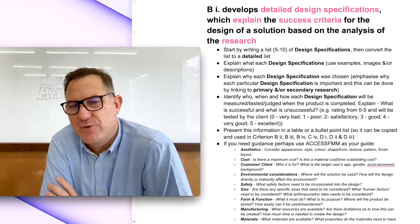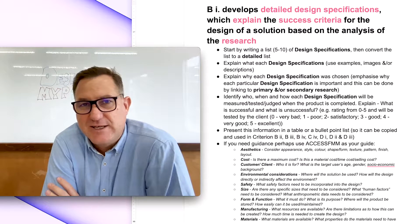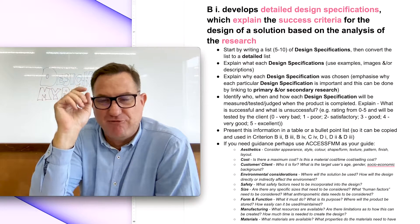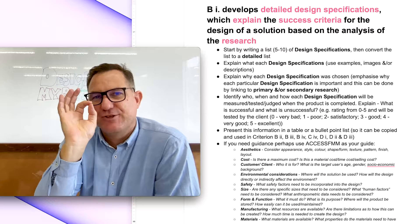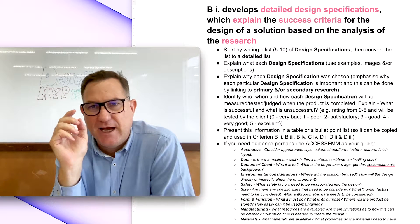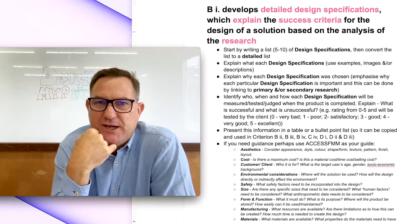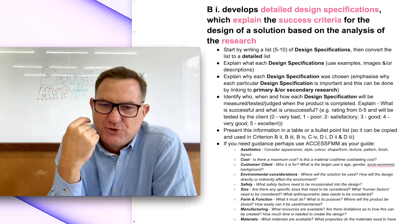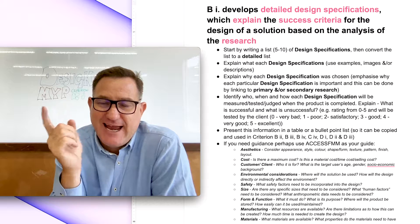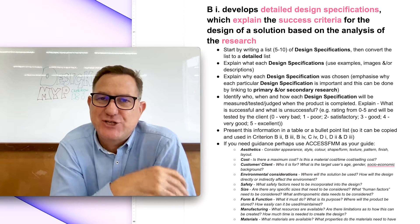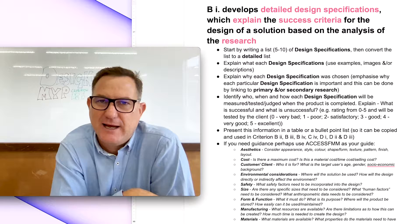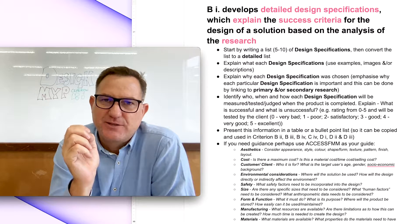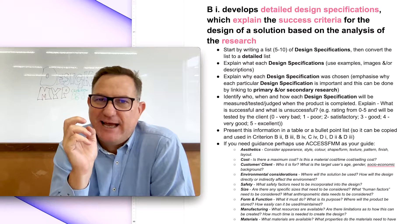So first of all I would recommend that you start with a list of design specifications. So just try to aim for like between 5 and 10. Just list out the design specifications for the product that you're actually going to make. Now if you're stuck for inspiration, not sure where to start, you could revisit Criterion A Strand 3. Now when we did Criterion A Strand 3, that is where you looked at some existing products and analyze them.